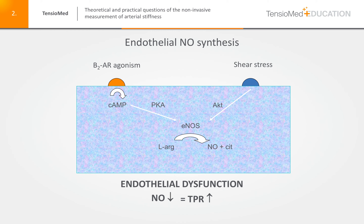The biochemical endothelial nitric oxide synthesis can be seen in this picture. The major physiological factors contributing to endothelial nitric oxide synthase (eNOS) are shear stress and B2 adrenergic receptor agonism. Both physiological factors increase the production of endothelial-derived nitric oxide synthase, which produces nitric oxide and citrulline from L-arginine, an amino acid. If this process is disturbed and eNOS activity is reduced for any reason, nitric oxide production will be diminished.